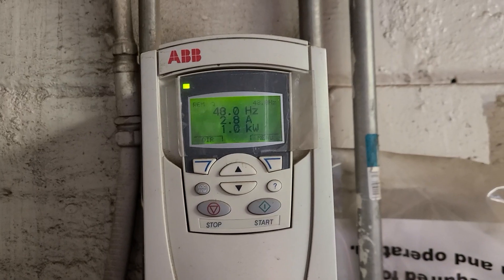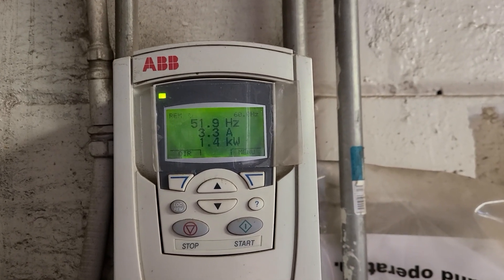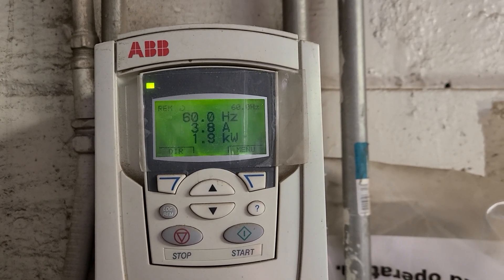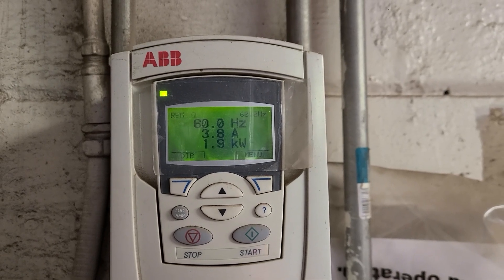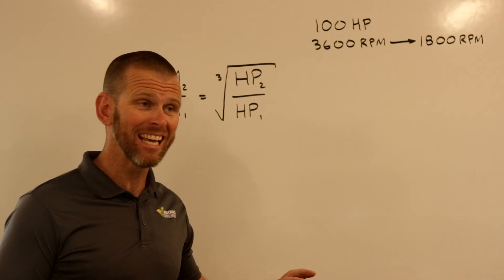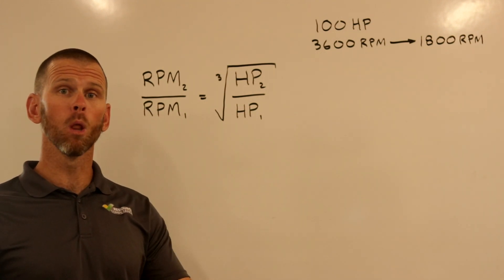A more energy efficient option for screw compressor capacity control is the utilization of a variable frequency drive or VFD on the compressor motor. VFDs modify the frequency of the power supplied to the motor, which in turn lowers the rotational speed. The beauty of VFDs is that the power consumption varies as a cube of the motor speed. This means that if we reduce the motor speed to one half of the design speed, the power consumed will be reduced to one over two cubed or one eighth of the original power.